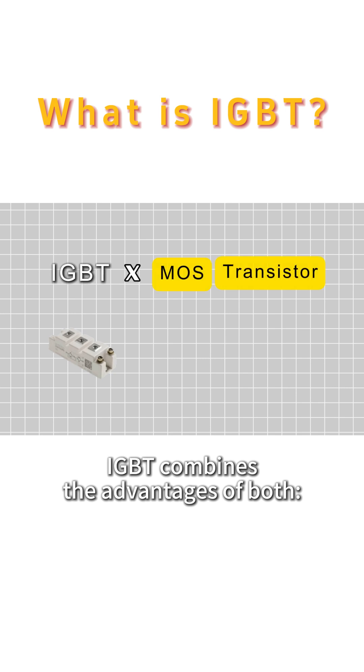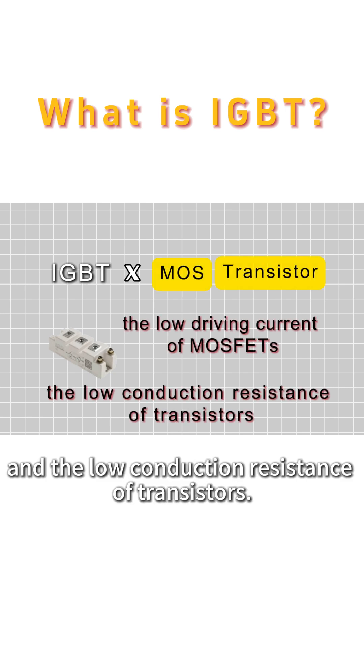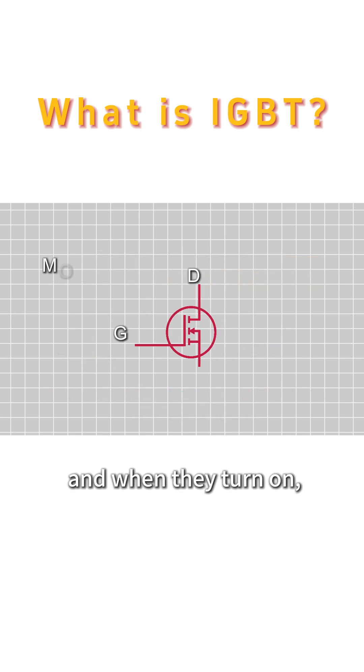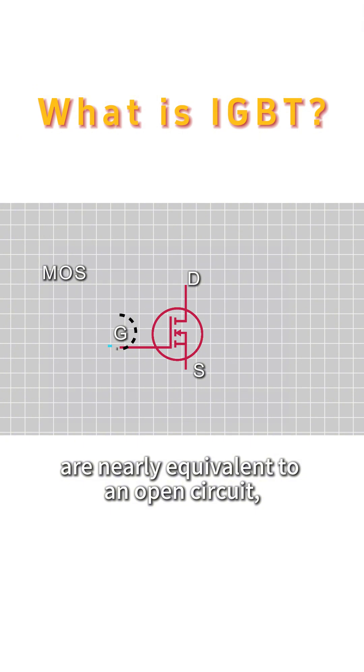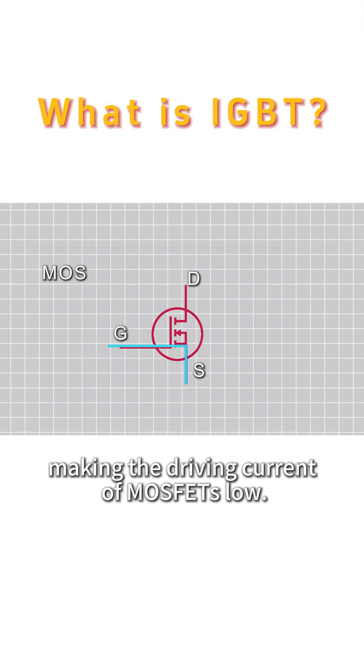IGBT combines the advantages of both, the low driving current of MOSFETs and the low conduction resistance of transistors. MOSFETs are field effect devices, and when they turn on, the gate and source are nearly equivalent to an open circuit, so the current is minimal, making the driving current of MOSFETs low.